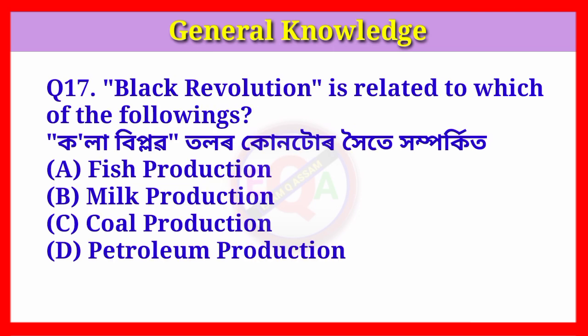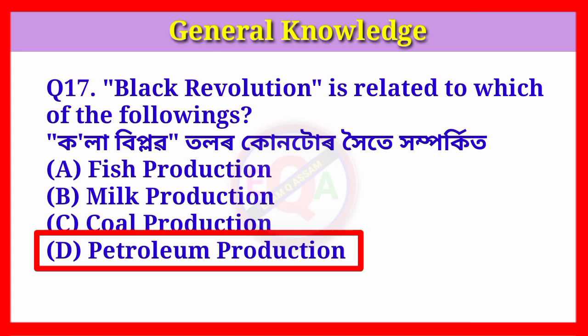Question number seventeen: Black revolution is related to which of the following? Answer: Option D, Petroleum production.